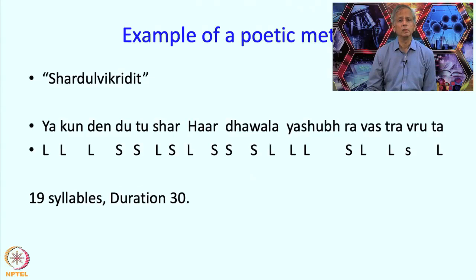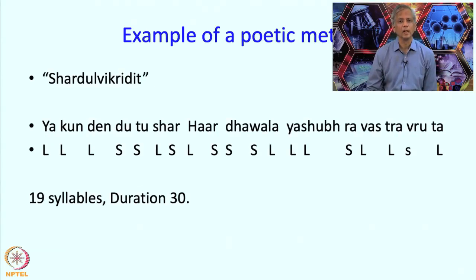So ya kundendu tusharahar dhavala ya shubhravastravruta. As you can see, the first 'ya' is a long syllable, 'kun' is a long syllable, 'den' is a long syllable. But then 'duttu' are short syllables. Overall there are 19 syllables and the total duration is 30 if you count it.